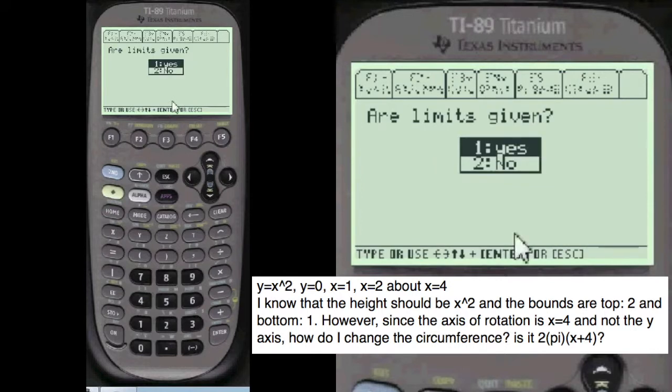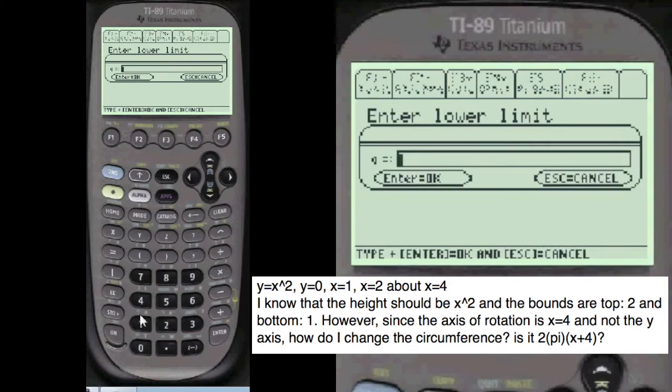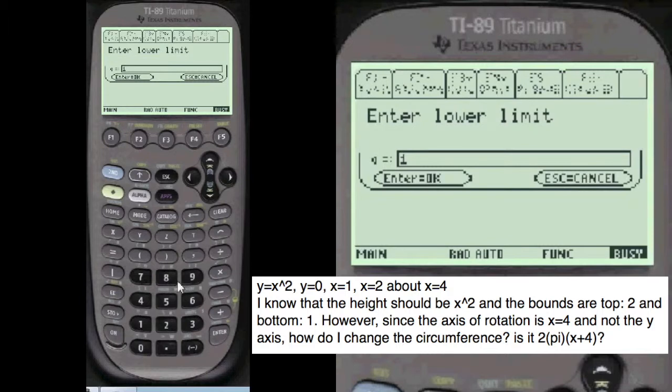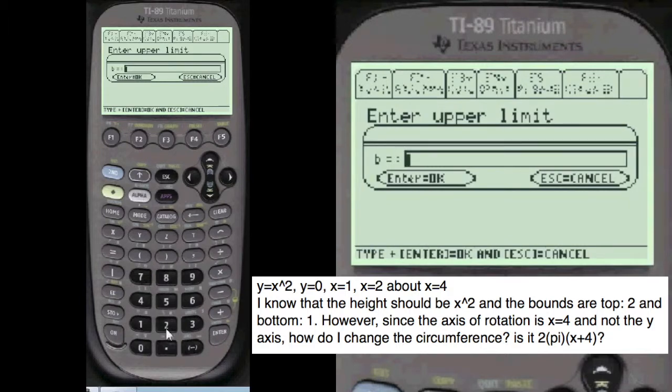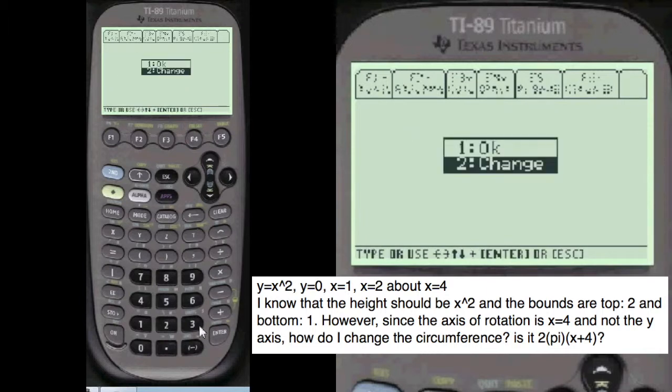Are the limits given? Yes, they are. The limits are given as x equals 1, alpha 1, and alpha 2. Can I show you what you've entered?